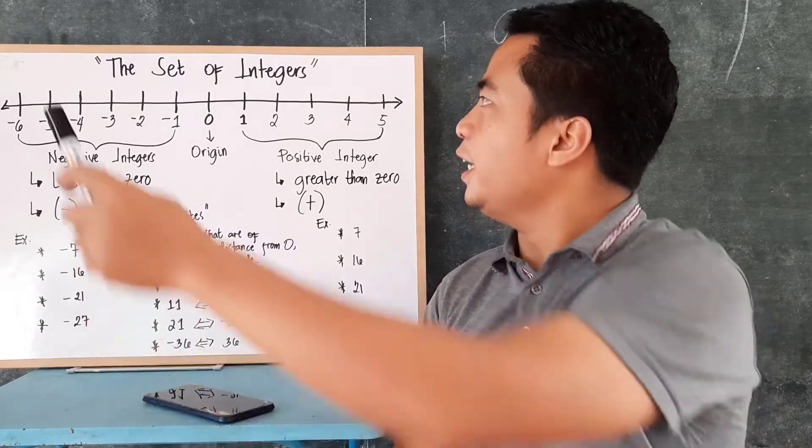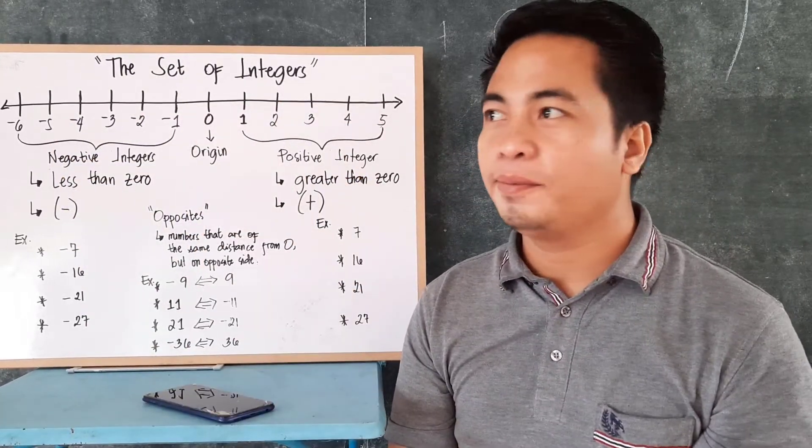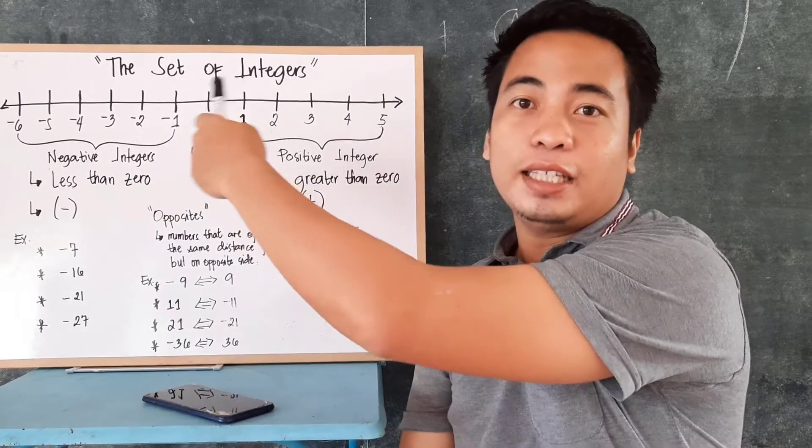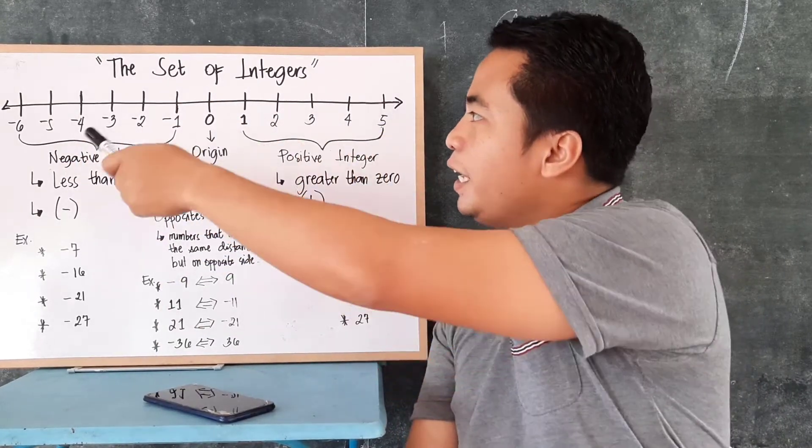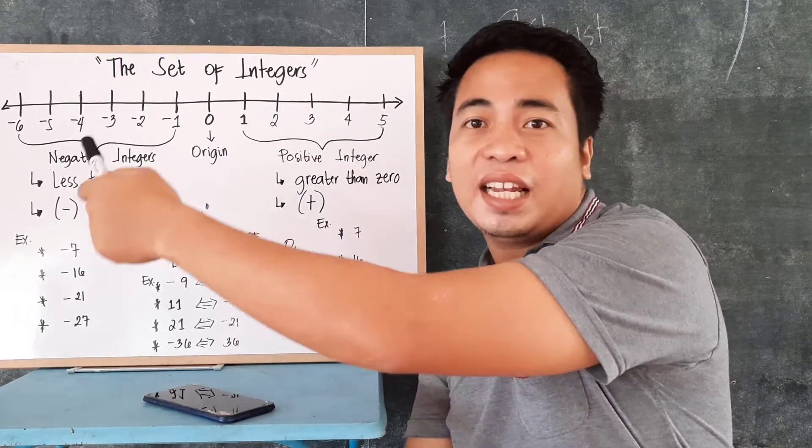We are going to learn today the set of integers. Now, to better understand the set of integers, we will use the number line system. This line here, it represents all real numbers.